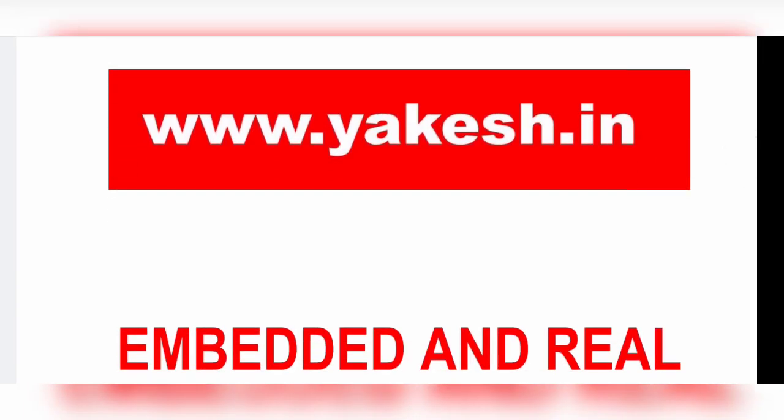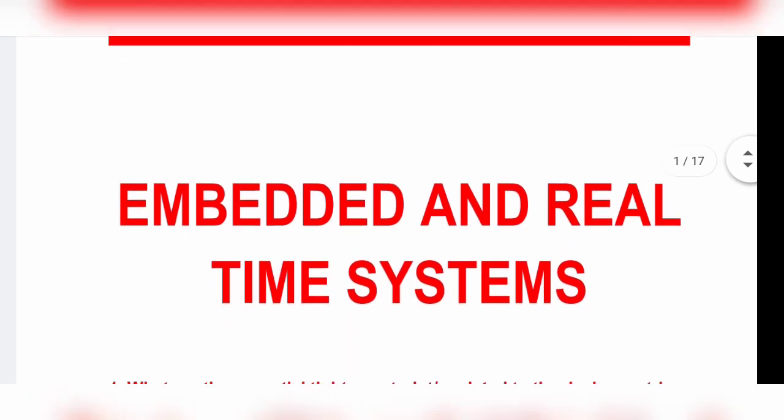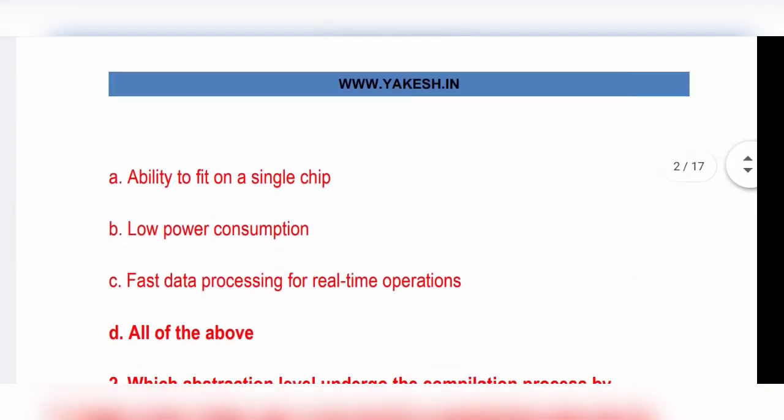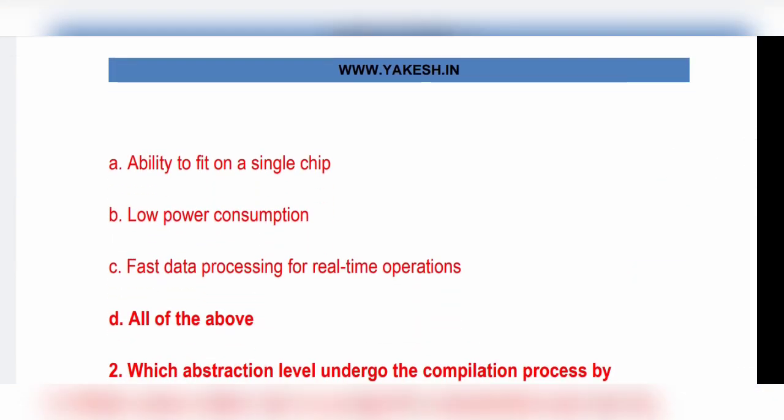Hello everyone. Embedded and real-time systems, important multiple choice questions and answers. First question: What are the essential type constraints related to the design mentality of an embedded system? Option D, all the above, is the correct answer.